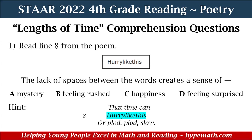Let's look at our comprehension questions for Lengths of Time. The first one is: read line 8 from the poem. The lack of spaces between the words creates a sense of — A, mystery; B, feeling rushed; C, happiness; D, feeling surprised. Line 8 is hurry like this. The hint is: time can hurry like this or plod, plod, slow. When you think of hurry, that's a context clue — the answer is B, feeling rushed.